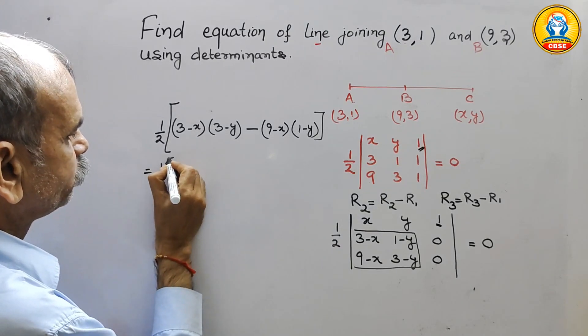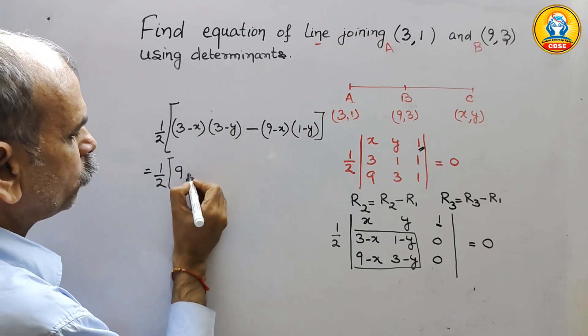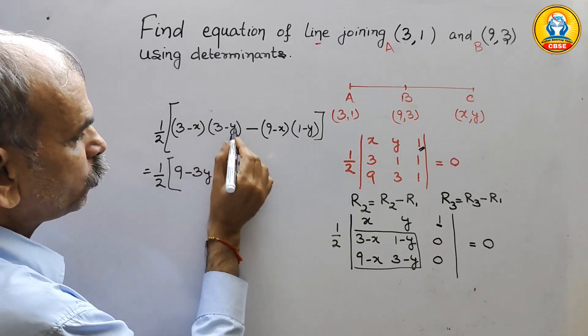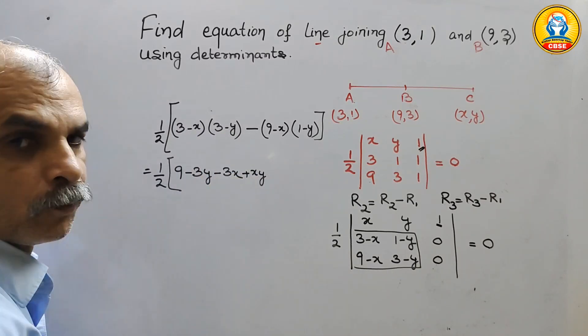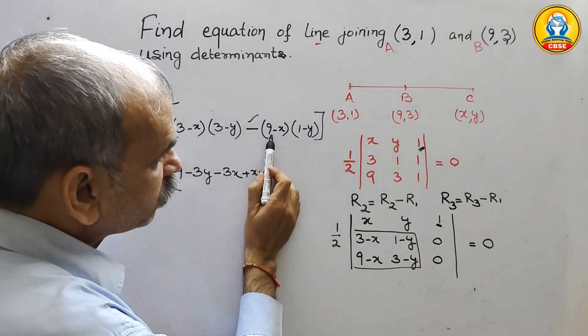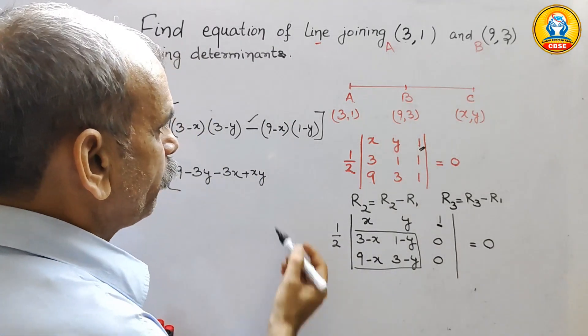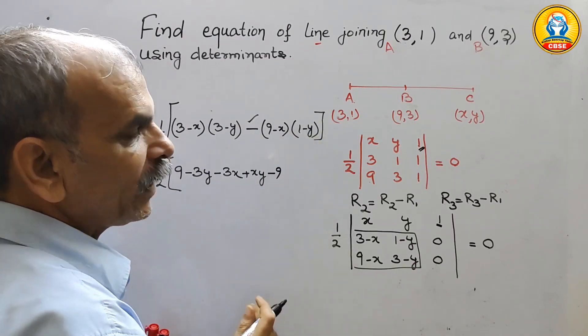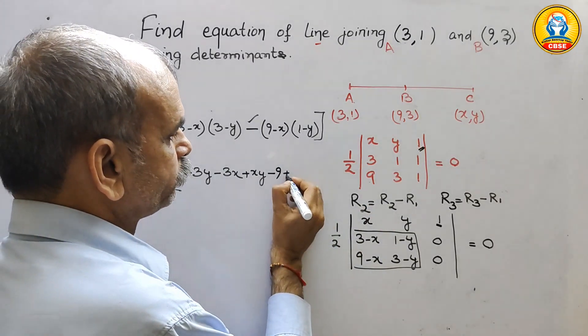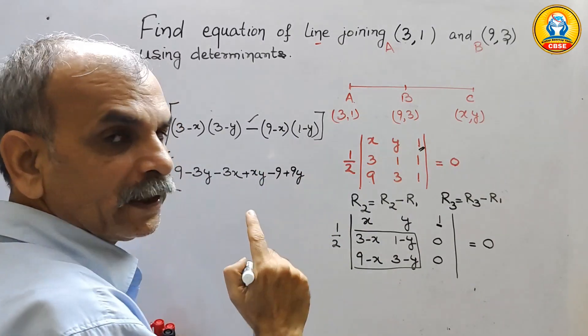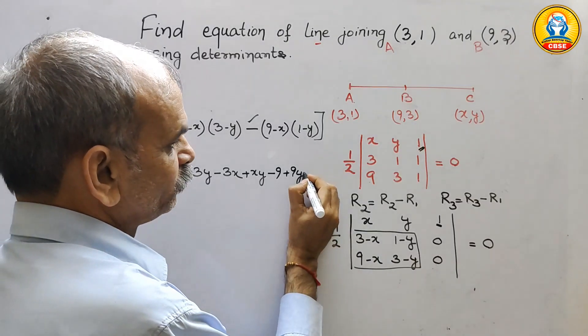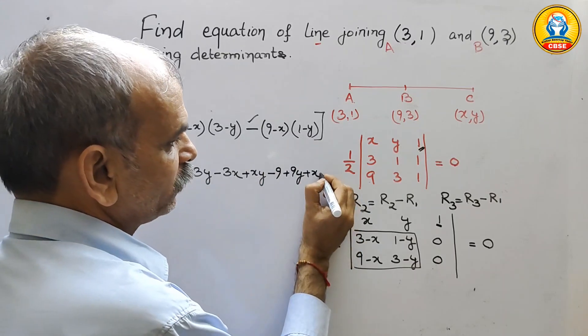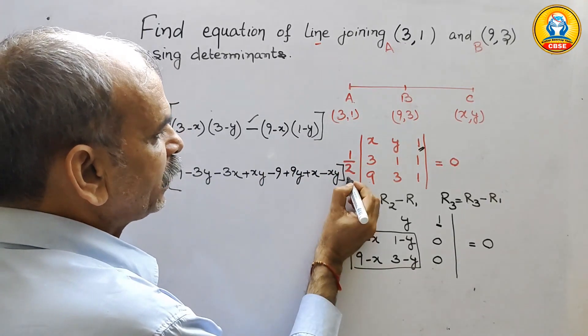If you solve this, what we will get? 3 into 3 is 9. 3 into minus y is minus 3y. Minus x into 3 is minus 3x. Minus into minus is plus xy. Now, here minus is given. So whatever we will solve here, just we will change the sign of that. 9 into 1 is 9, that means minus 9. 9 into minus y is minus 9y, that means plus 9y. Minus x into 1 is minus x, that means plus x. Minus into minus is plus xy, that means minus xy. That is equal to 0.